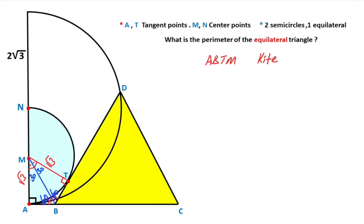If we focus on this triangle, notice that if there is a root 3 opposite the 60 degrees side, then the side opposite 30 degrees must equal 1 unit. That means this side here is also 1 unit.